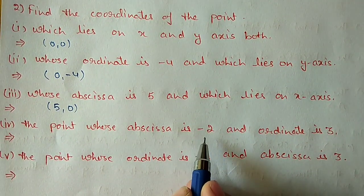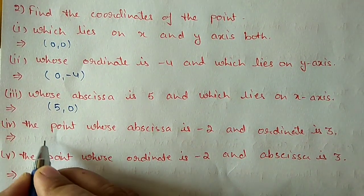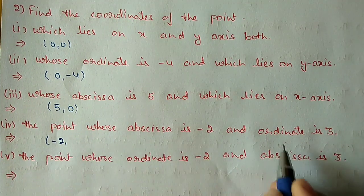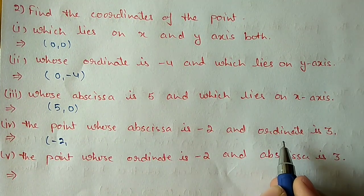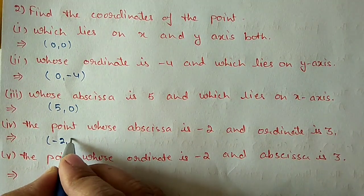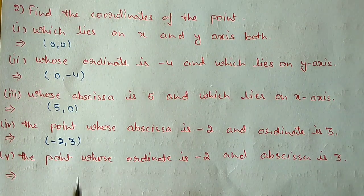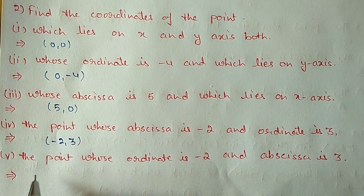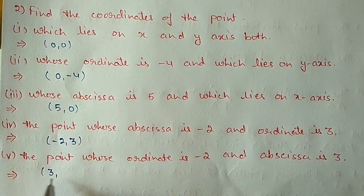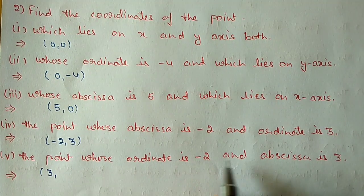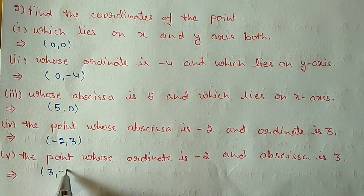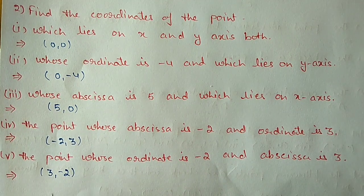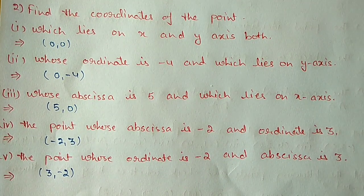Fourth: the point whose abscissa is -2 and ordinate is 3. Abscissa (x-coordinate) is -2 and ordinate (y-coordinate) is 3, so the point is (-2, 3). Fifth: the point whose ordinate is -2 and abscissa is 3. Always write x first, then y, so the point is (3, -2).